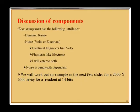Each component has attributes including dynamic range and noise. Electrical engineers talk in terms of volts and RMS noise while physicists prefer electrons. Noise is also bandwidth dependent. In the next few slides we look at a 2000-by-2000 array with 14-bit conversion and see how signal and noise propagate through the chain — representative numbers for a digital radiography system.